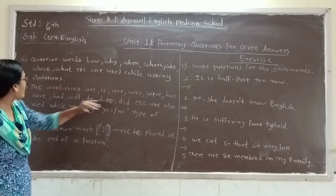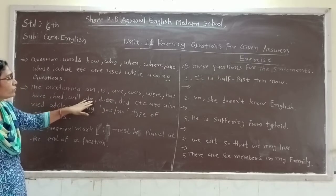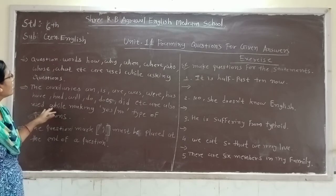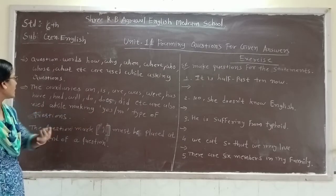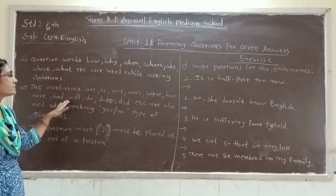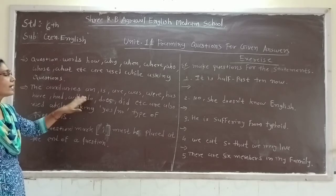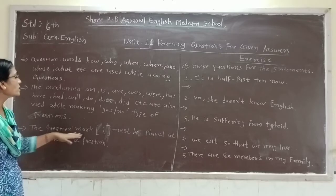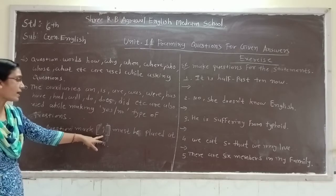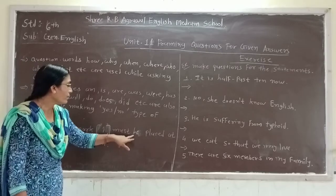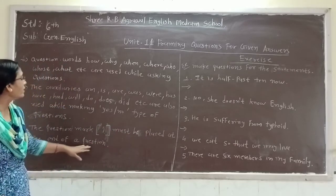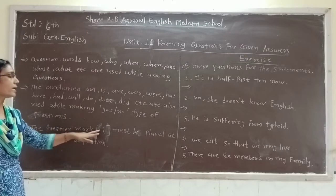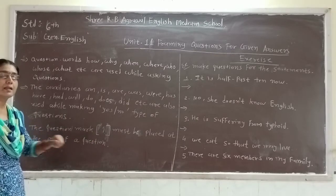Yes or no type के questions के answer जगते हैं, तब am, is, are, was, will, has, have, had, do, does, did आदि use होते हैं। The question mark must be placed at the end of a question. तो question बनाते हैं, तो उसके end में question mark हमें लगाना है।